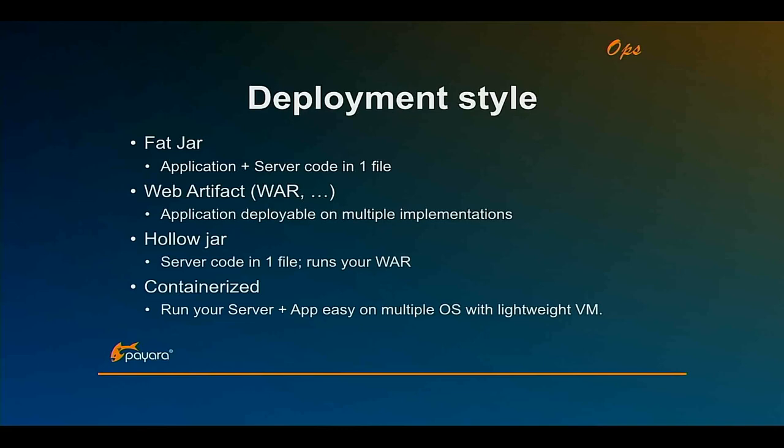Therefore, the Holojar technology is better suited for containers. You have your server code in one file and you can also start up with Java, but you point to a certain WAR file that needs to be run. So the server code always stays the same and can go in a lower layer of your Docker image. That's what all the discussion about fat-jar versus Holojar is about — operations. How would you deploy and run your business-critical thing that you need to maintain?